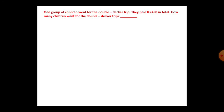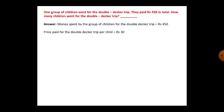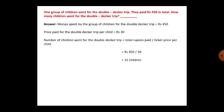One group of children went for a double-decker trip and paid 450 rupees in total. How many children went? Price per child for double-decker trip is 30 rupees. Total money paid is 450. So divide: 450 ÷ 30 = 15. There were 15 children in that group. Which boat makes two trips in one hour? One hour equals 60 minutes. The pedal boat takes 30 minutes per trip, so it makes 2 trips in one hour.